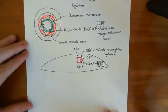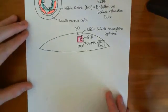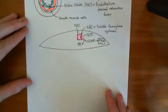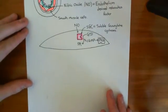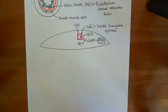Protein kinase G causes relaxation by activating the myosin light chain phosphatase, which removes phosphate groups from the myosin heads, as well as inactivating the IP3 receptor to reduce calcium release, and activating the SERCA pump to return calcium back into the sarcoplasmic reticulum. The important thing is that once the soluble guanylate cyclase enzyme becomes activated and releases cyclic GMP, that cyclic GMP causes the smooth muscle cell to relax. Now we want to study the structure of the soluble guanylate cyclase in more detail.